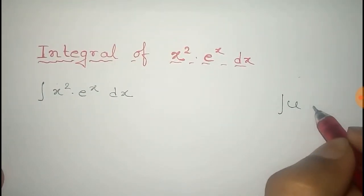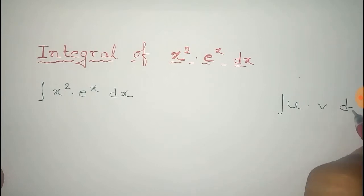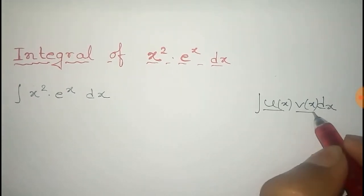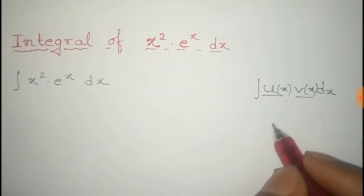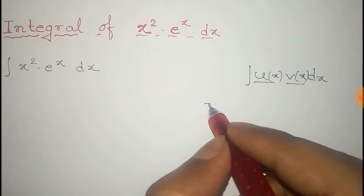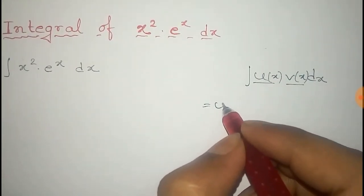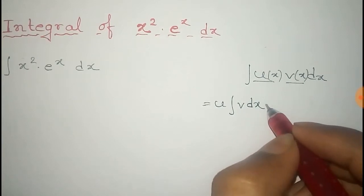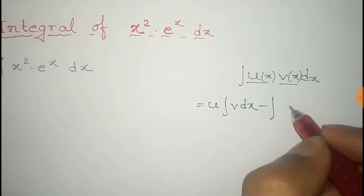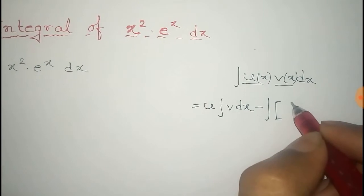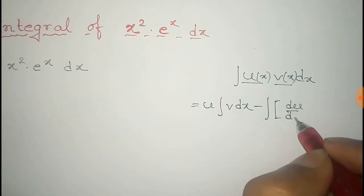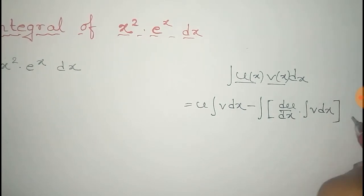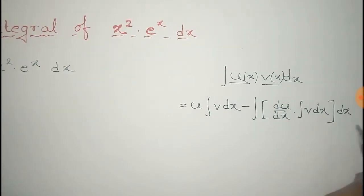Here both u and v are functions of x, and the formula is given by: u into integral of v minus the total integral of the derivative of u into the integral of v, and dx for the total integral.